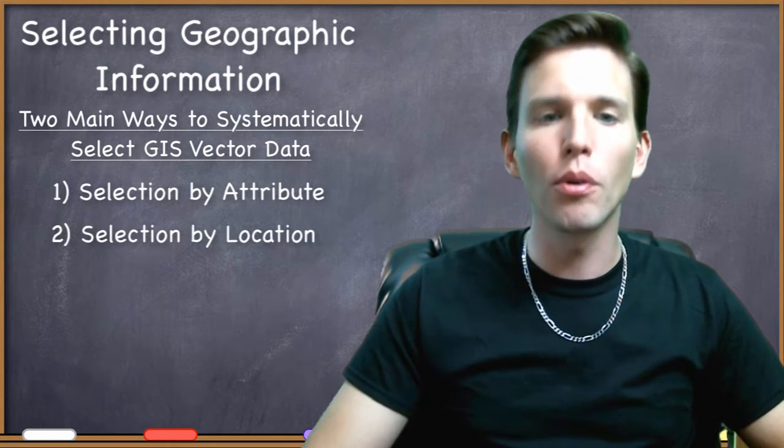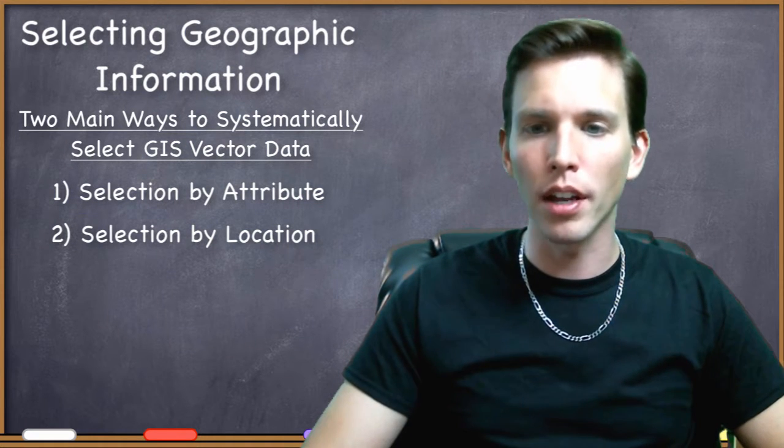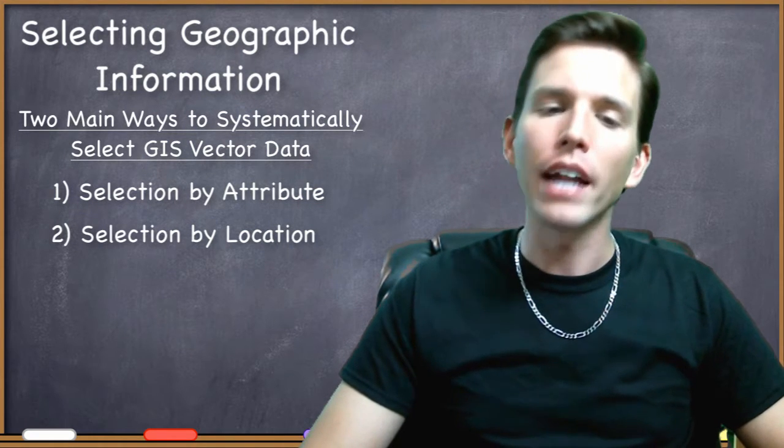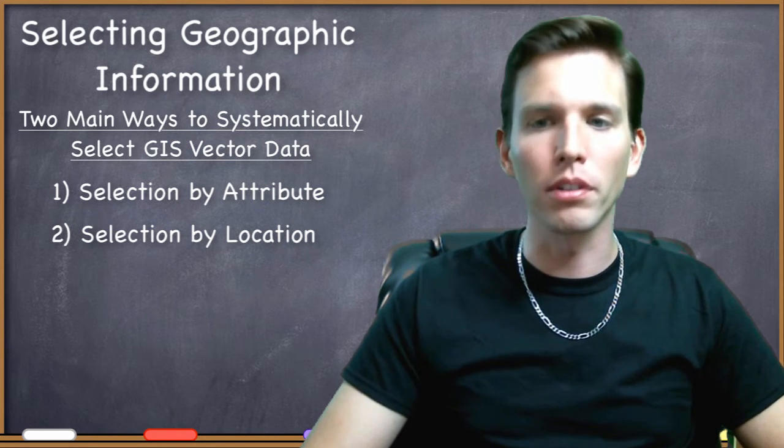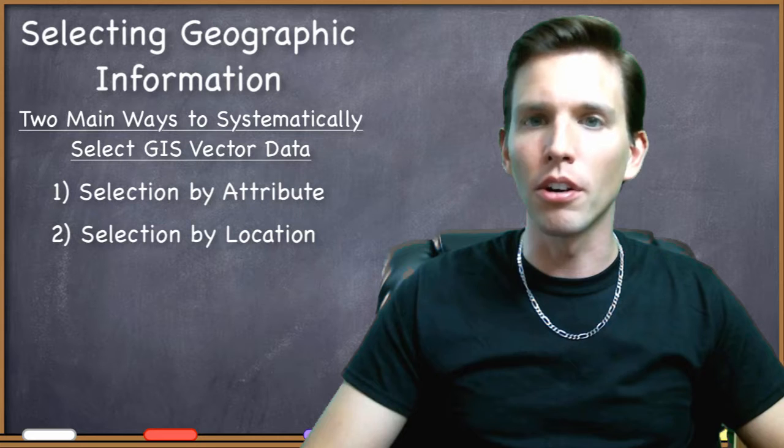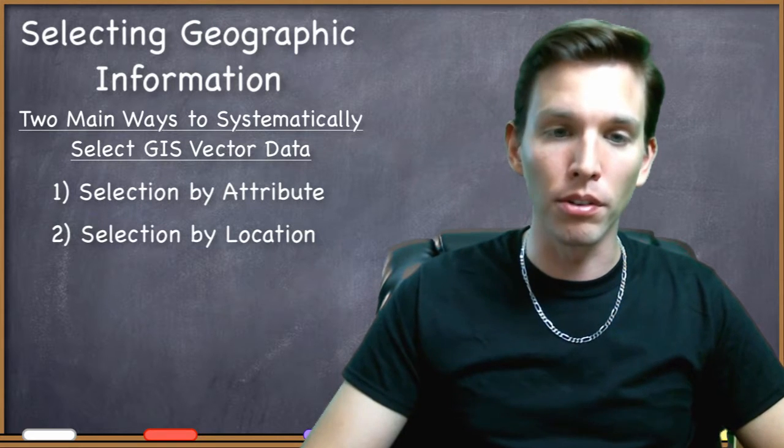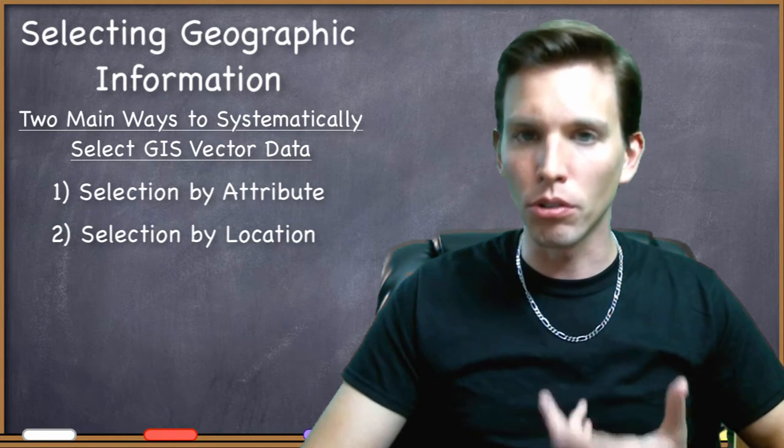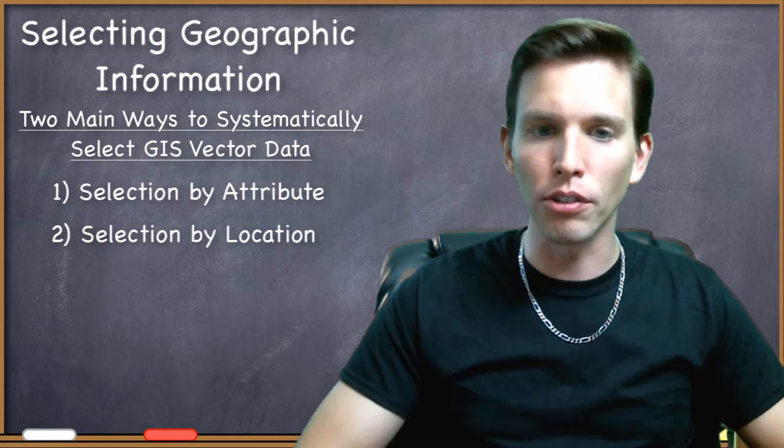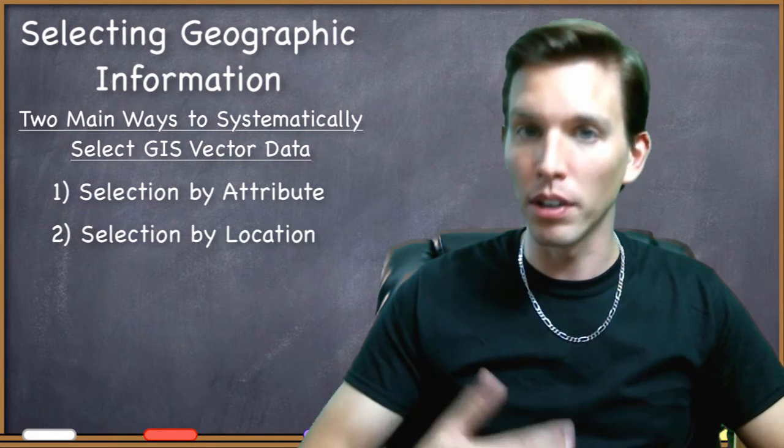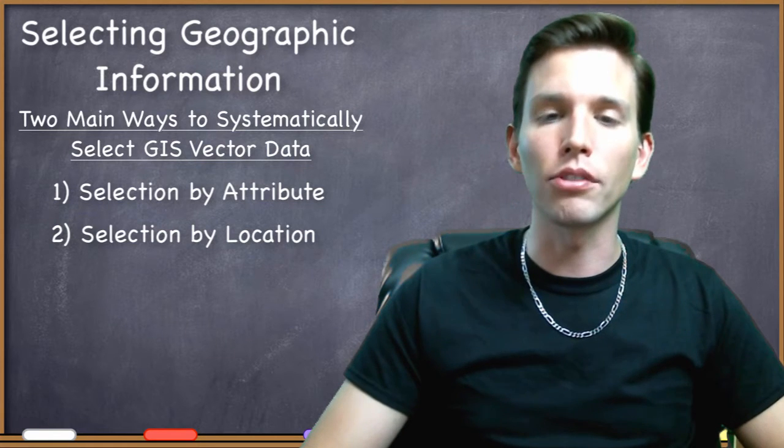As we've said before, the vector data model is all about geometry and attributes and the link between them, and so it makes sense that you should be able to query either one. In the previous video, we looked at selection by attribute in detail, which we use to query information about features according to the characteristics stored in the attribute table, and we did this by constructing SQL queries.